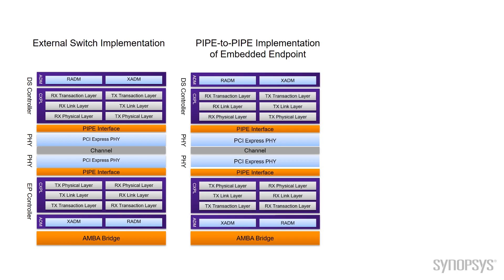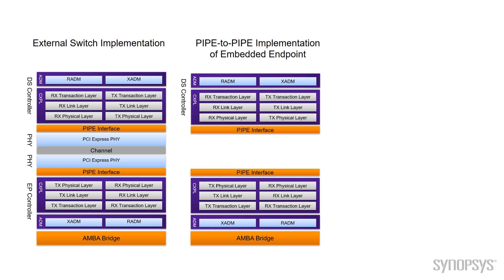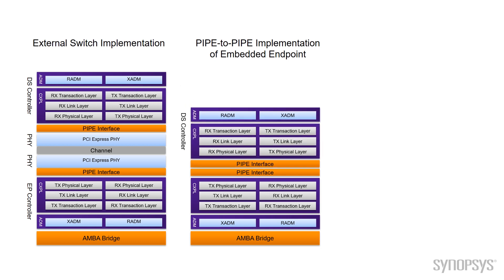When we go to an embedded switch and an embedded endpoint, we can start to do things differently. We've removed the physical links completely — the channel is gone, and the two PHYs are gone. What I'm showing here is a conventional pipe-to-pipe implementation of embedded endpoint. This is pretty efficient: we've gotten rid of some of the logic and some of the latency. We're not serializing and deserializing anymore — we're going directly pipe to pipe, with no need to go serial at all.